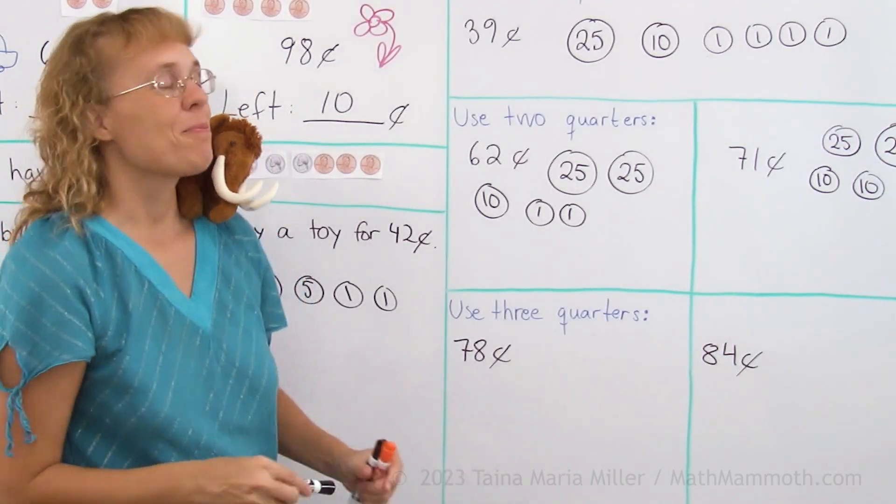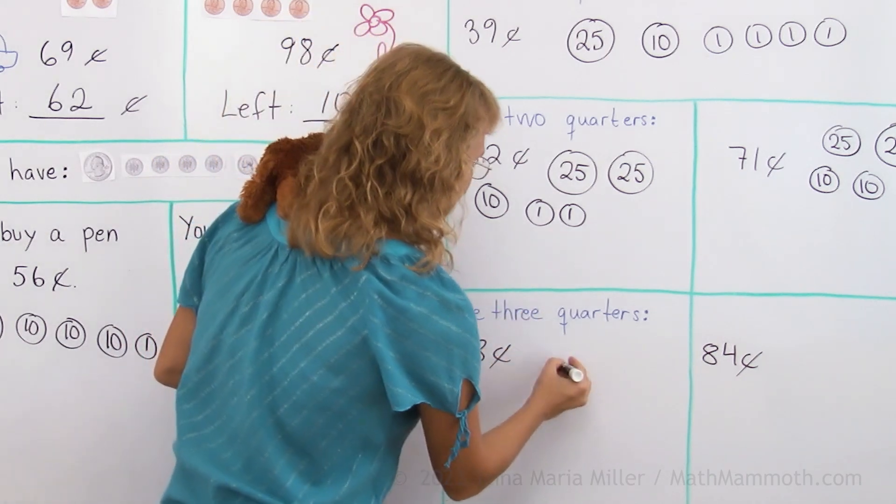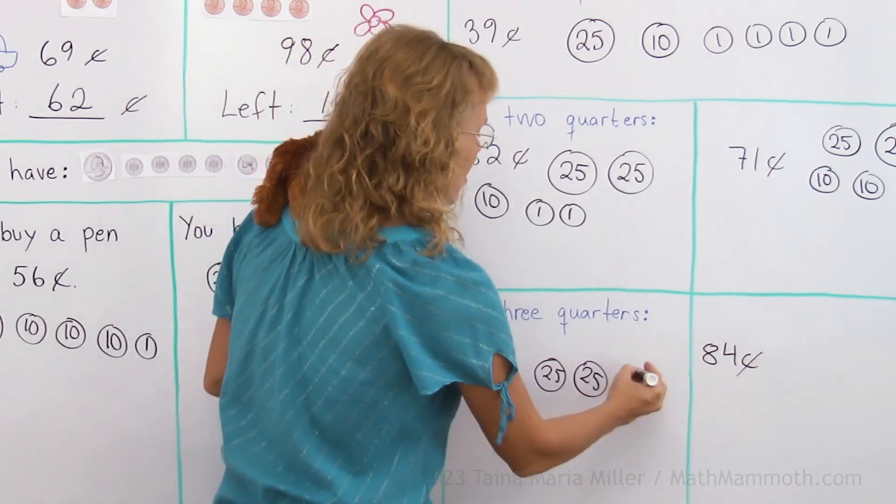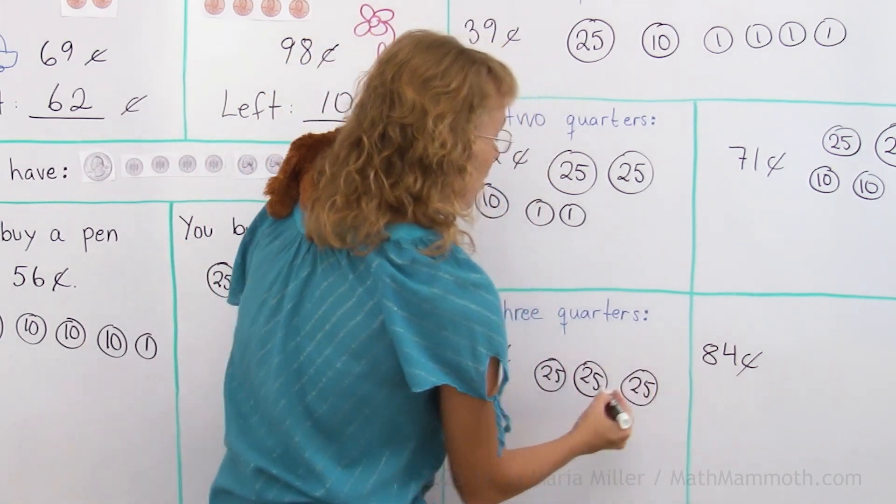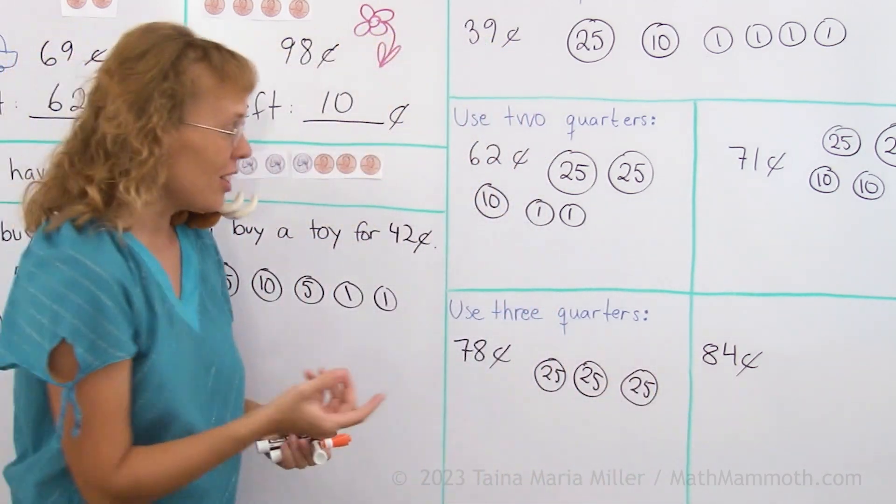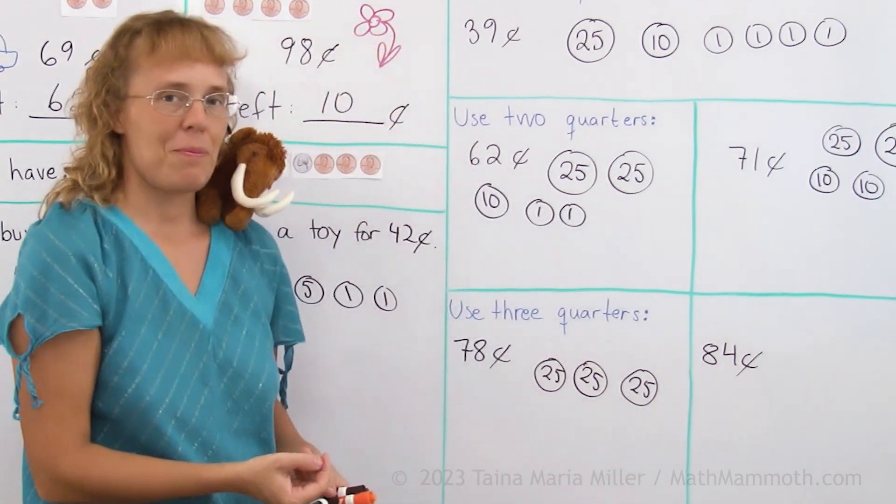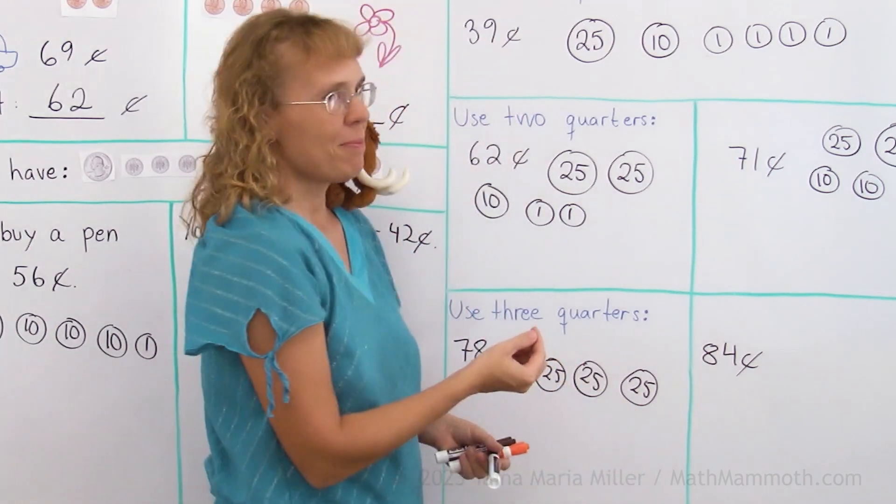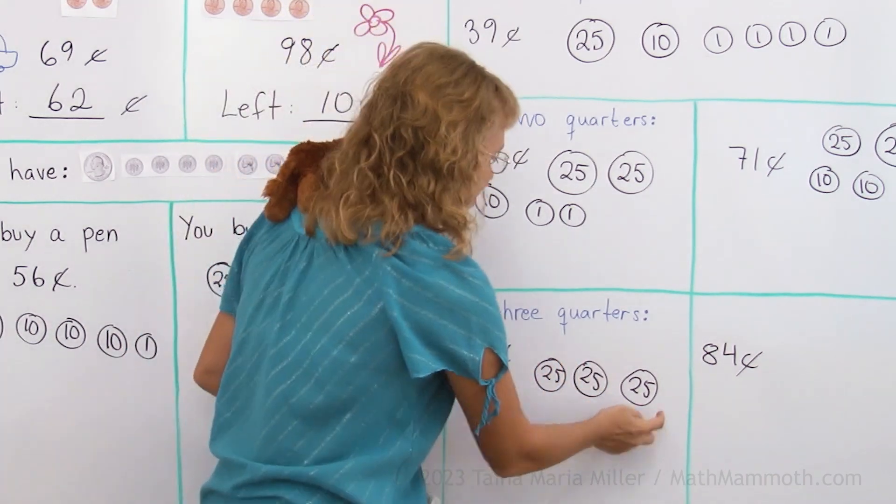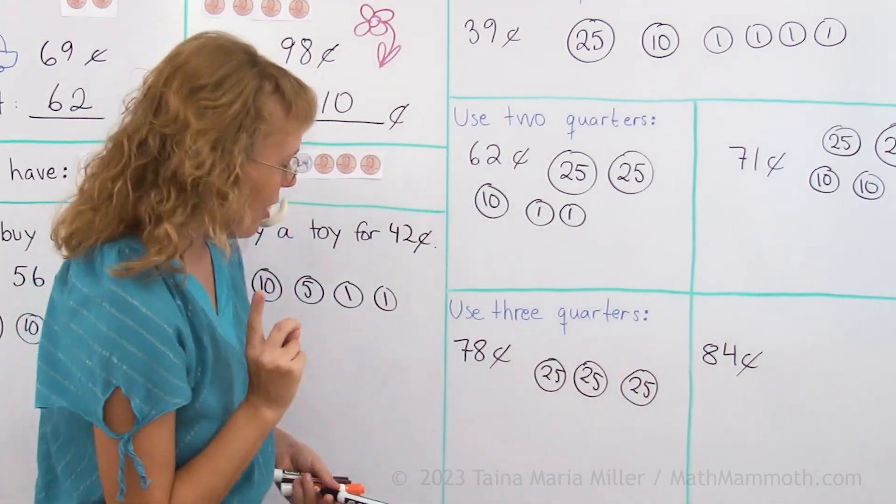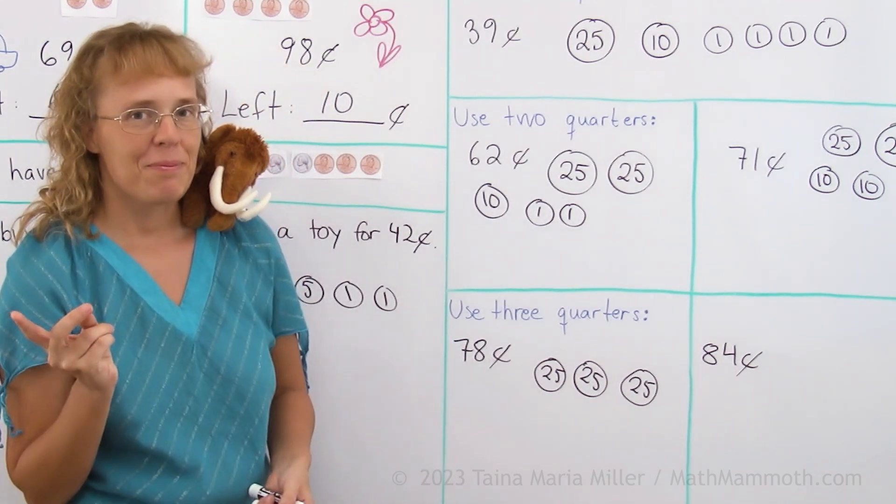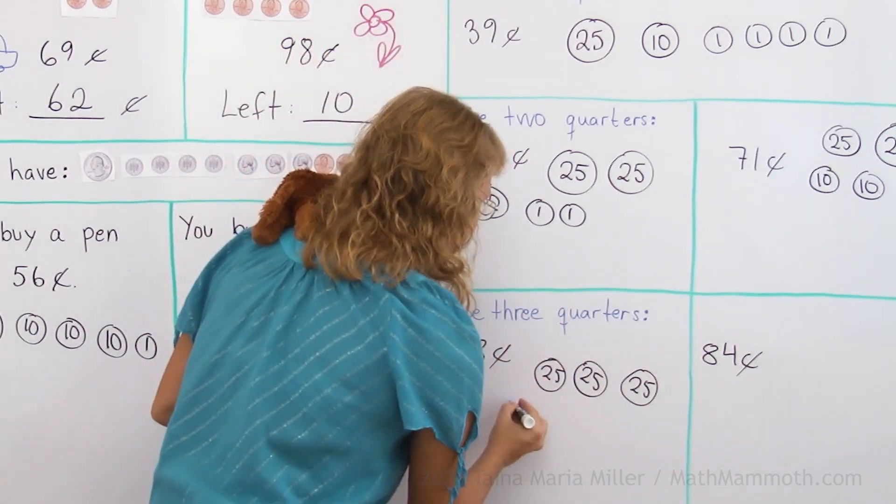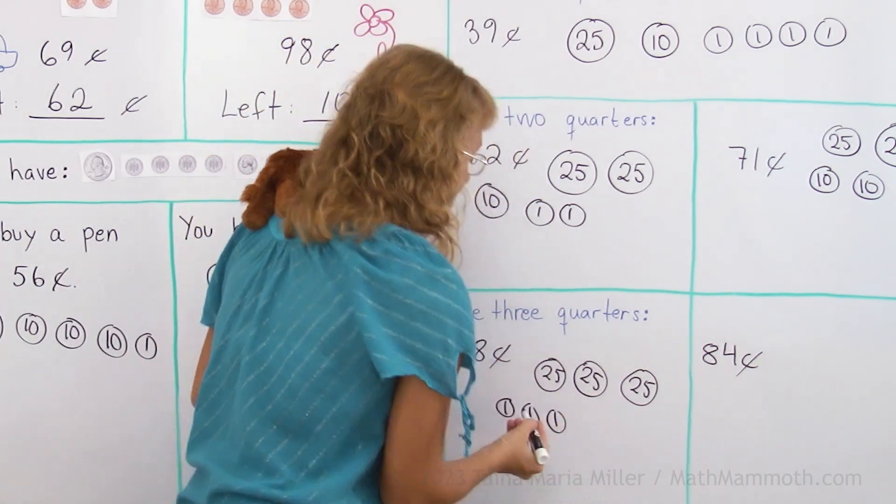Use three quarters, okay. 25 and 25, that's 50, you remember that, right? And third quarter, how much is it in total? These are 50 and 25 more. Think of it this way, 50 and then 20, that's 70, and then 5, 75 cents right there. So how much more do we need? Just three pennies, three cents more, that's it.